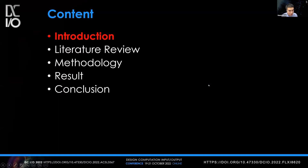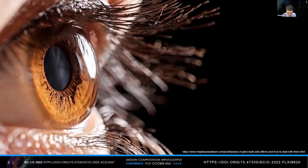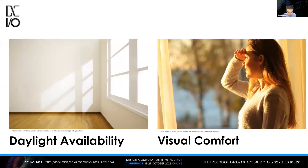For the introduction: when we look at a human eye, it includes all amazing details. When we perceive the 3D world, all information comes through the eyeball into our mind. When we design a space, we need to balance daylight availability and visual comfort. On the one hand, we need sufficient light levels for different indoor activities. On the other hand, too much light will cause glare and overheating problems.